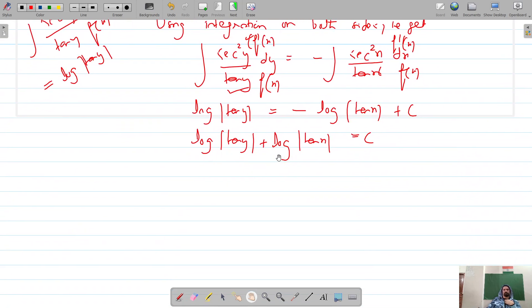This is of the form log a plus log b. Log a plus log b gives us log of a into b. This becomes log of tan x into tan y is equal to c, and tan x into tan y is equal to e raised power c.